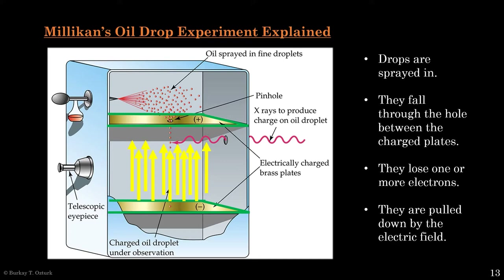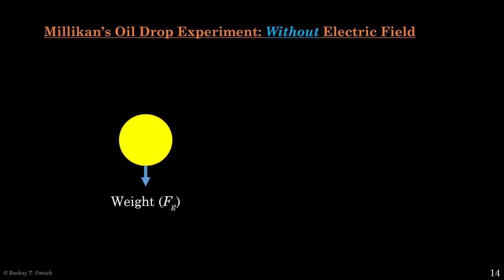Remember the electrically charged plates? Those plates generate an electrical field, which pulls the positively charged drops down. If that flew over your head, no worries. Let's understand the behavior of the oil drops. First, let's look at the simpler case without the electric field. Let's say this yellow thing is a spherical oil drop falling through the contraption. There are a few forces acting on it. The first one is its weight, or Fg, pulling down. Fg equals m times g. The math will soon look complicated, but you don't need to remember any of the specific equations or formulas.